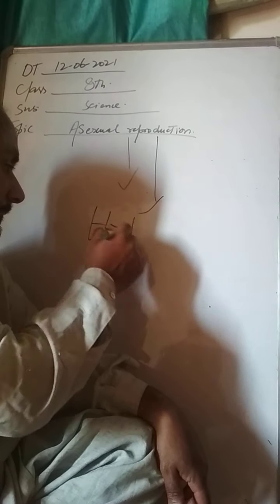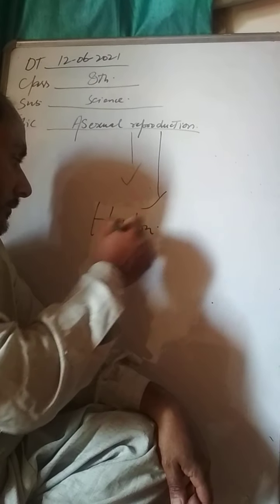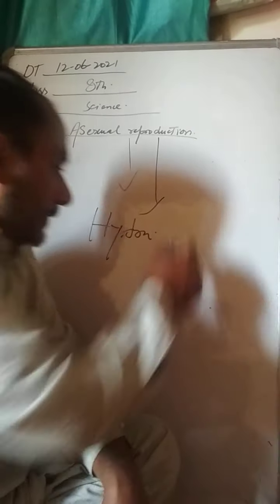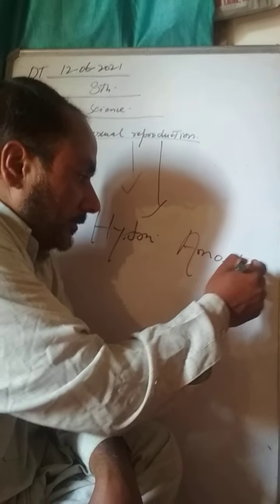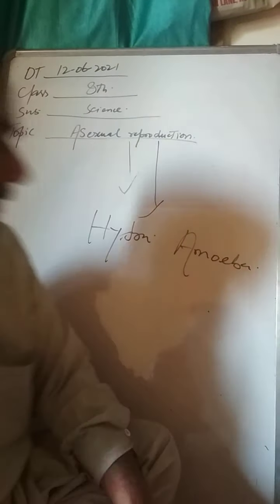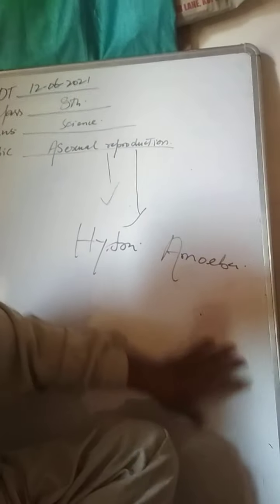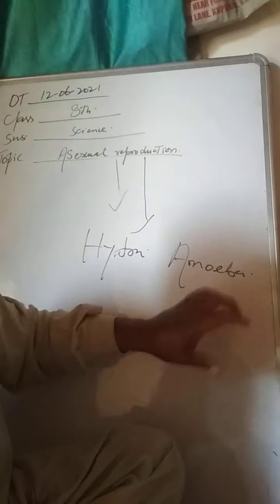For example, in Asexual Reproduction, Hydra reproduces by Budding. Budding is one example of Asexual Reproduction.